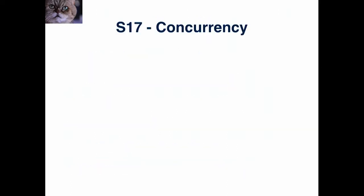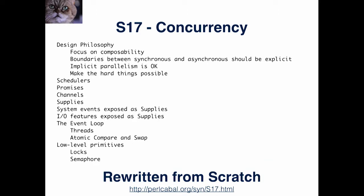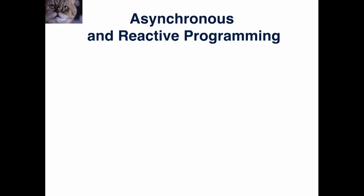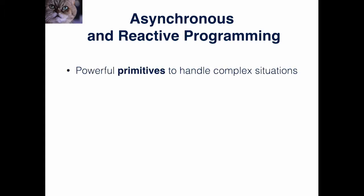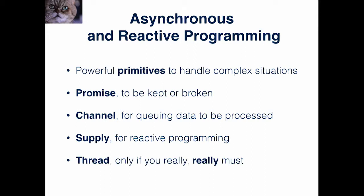Concurrency — the spec for it has been completely rewritten and almost completely implemented, rewritten from scratch. Asynchronous reactive programming — Jonathan showed quite extensively today what you can do with that. Powerful primitives: promises, channels, supplies, and threads. But threads only — only, only, only if you really must. If you don't need to, please don't.